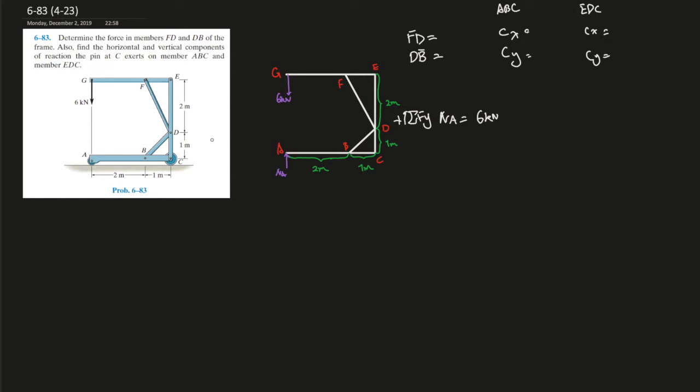Also find the horizontal and vertical components of reaction at pin C exerted on members ABC and members EDC. That's right over here. So the first step is always to find the global equilibrium to get started, and I've just done it over here.